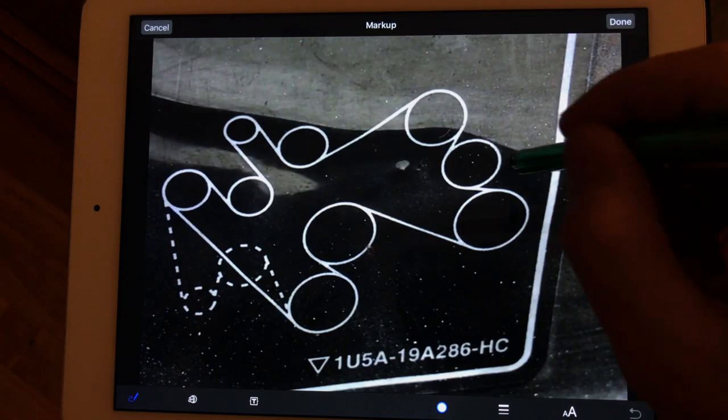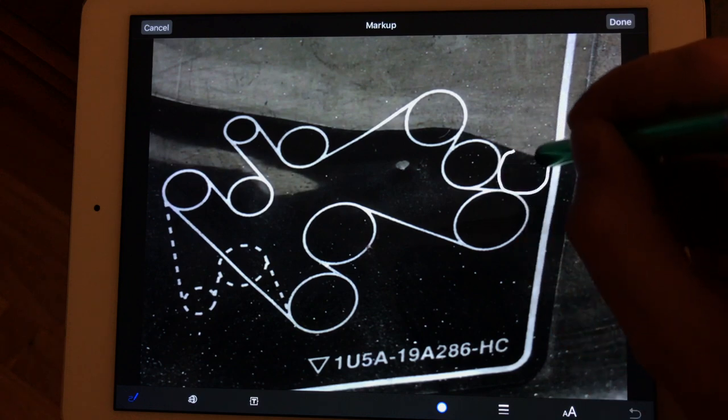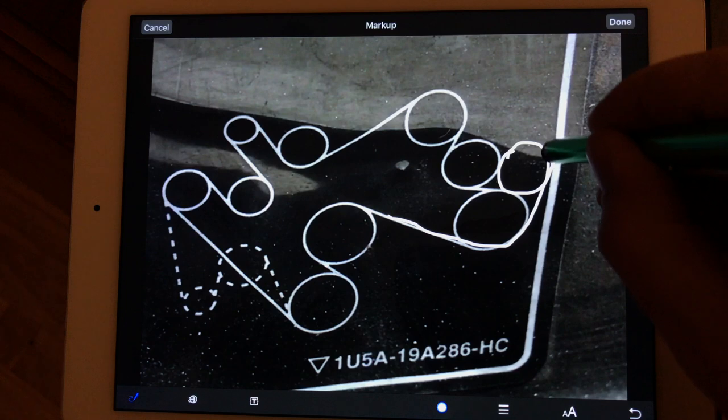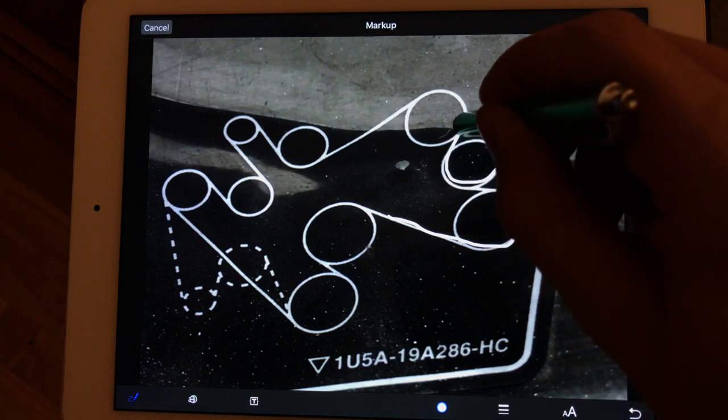So number one, the new routing diagram should look something like this with the second compressor added around this area and a drive belt around it like such.